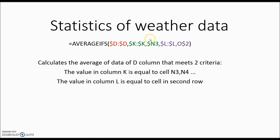The dollar sign before N means we will be moving down column N, so the values might be N3, N4, etc. Here, the addition of a dollar sign before the row means we will be moving across row 2 — columns O, P, Q, etc. — depending on where the cell is. Let's see an example.